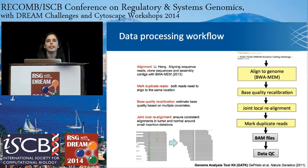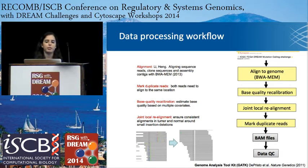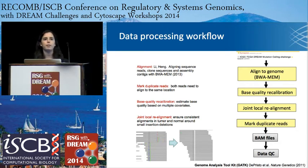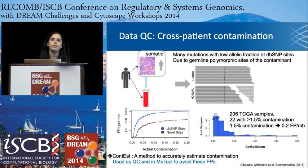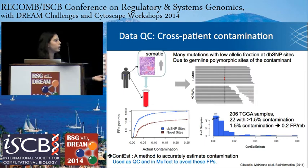Once we had these BAM files, we also performed an additional data QC metric using our tool ContEst, which was previously published. The lab can be a messy place, so there is contamination in data that makes it not 100% pure. For example, in 260 TCGA samples, 22 had at least greater than 1.5% contamination — where blood from a different individual at very low frequency contaminates your current sample. The phenotype of this is very low allele fraction events in your tumor that happen at dbSNP sites at high frequency in the population. We applied this method and fed the result from ContEst into our mutation caller.